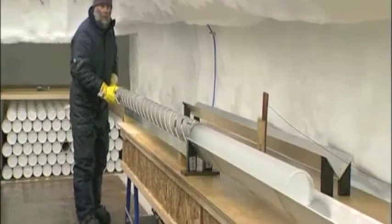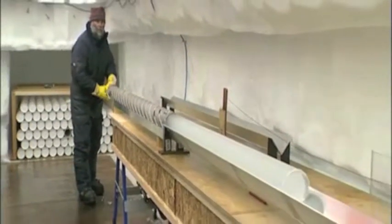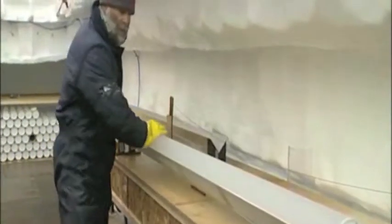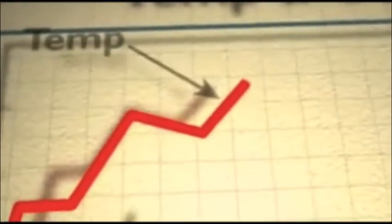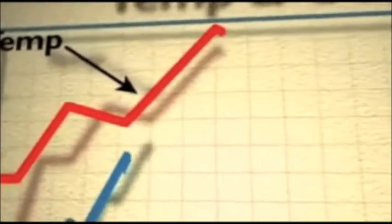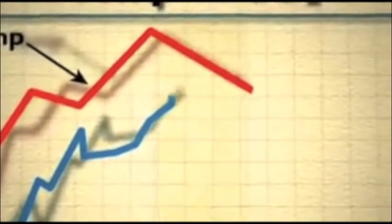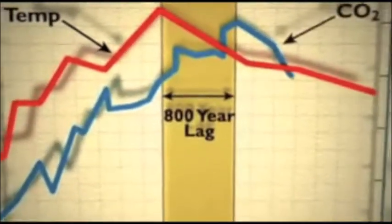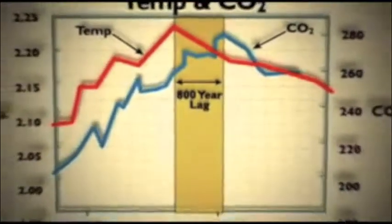Ice cores can also provide information on temperature. Scientists employed by Martin Durkin, the writer of The Great Global Warming Swindle film, analyzed ice core samples taken from the poles and graphed the results. In red, we see temperature going up from early time to later time at a very key interval when we came out of a glaciation. We see the temperature going up, and then we see the CO2 coming up. CO2 lags behind that increase — it's got an 800-year lag, so temperature is leading CO2 by 800 years.